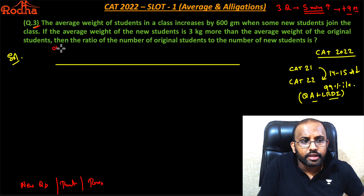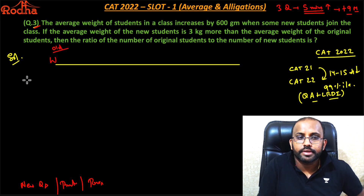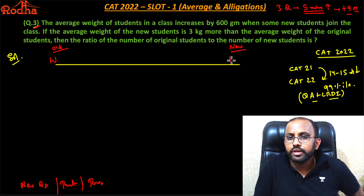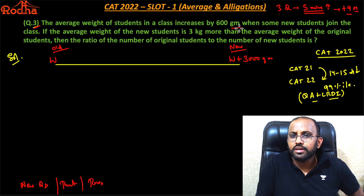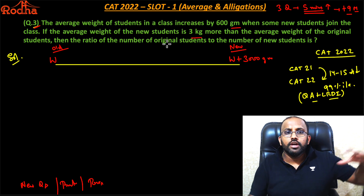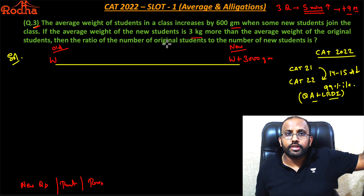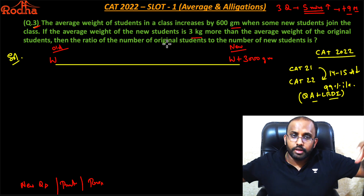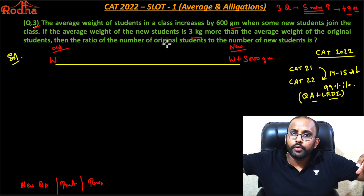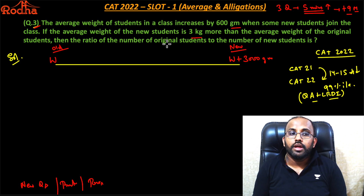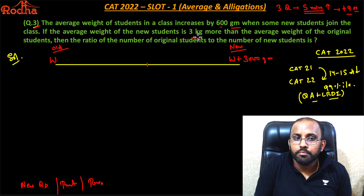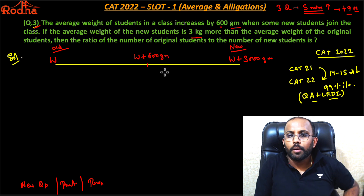We draw a line for allegation. The old students have average weight W. The new students who joined have weight W plus 3,000 grams — I've converted to grams. Now the new average becomes W plus 600 grams. So one set of people has weight W and the other has W plus 3,000 grams, giving a new average of W plus 600 grams.